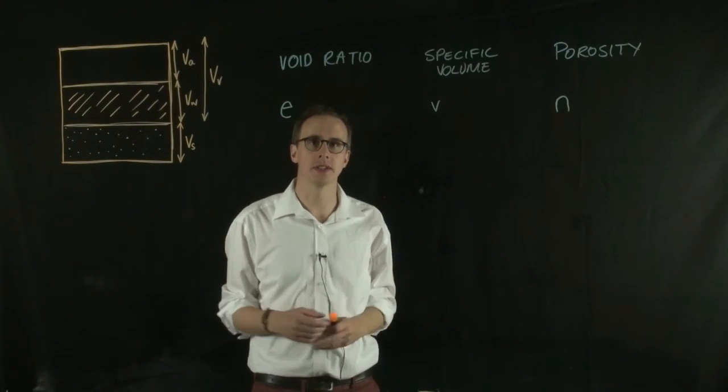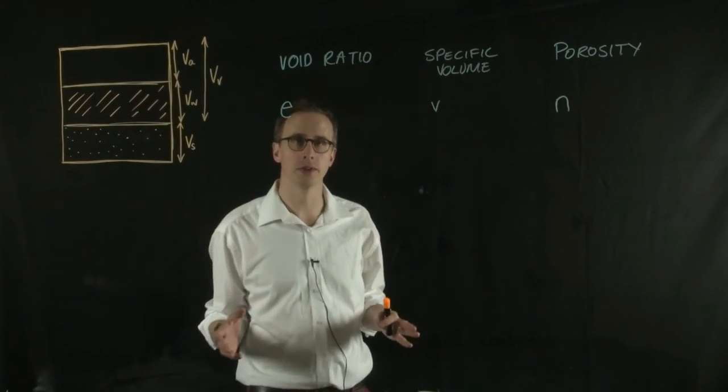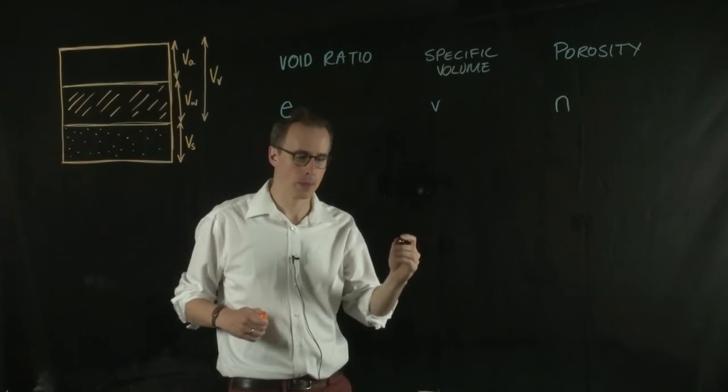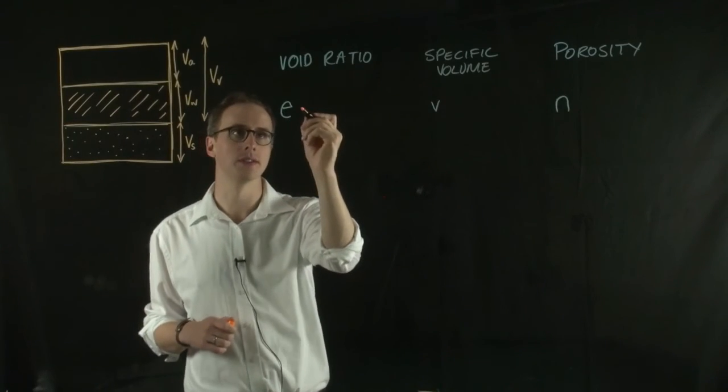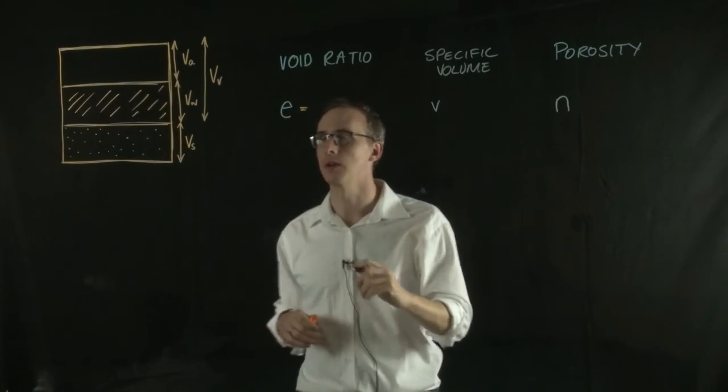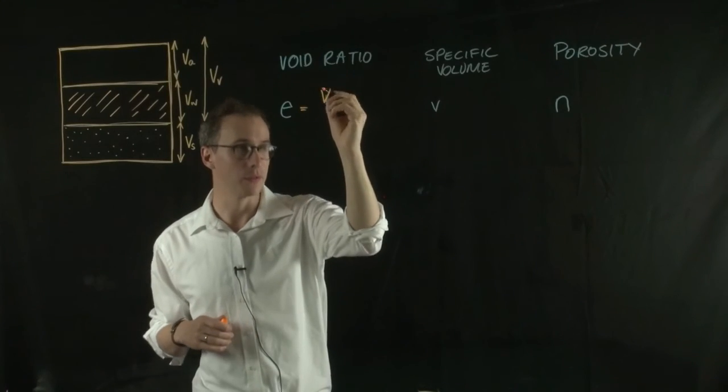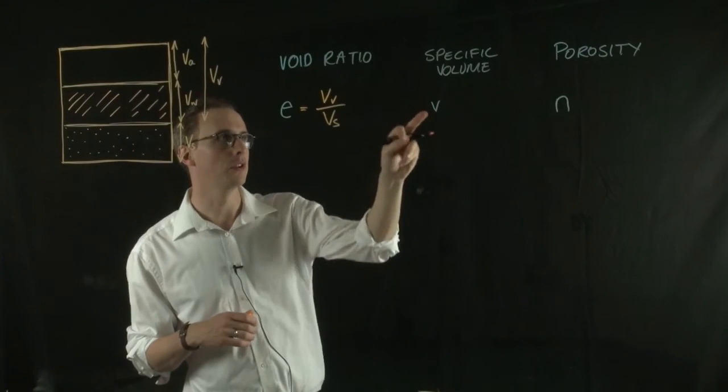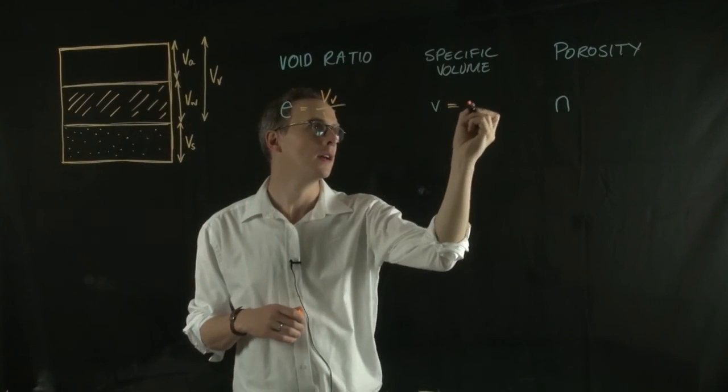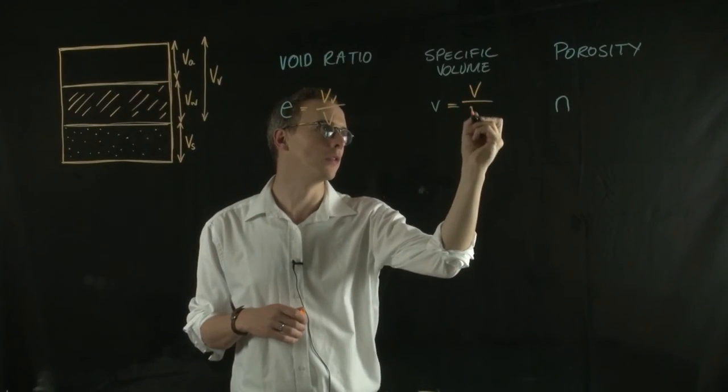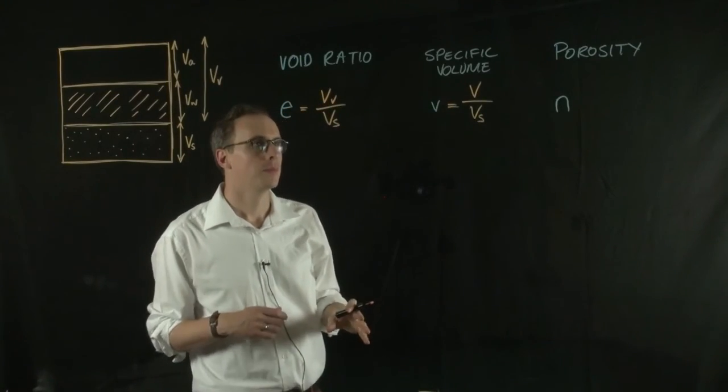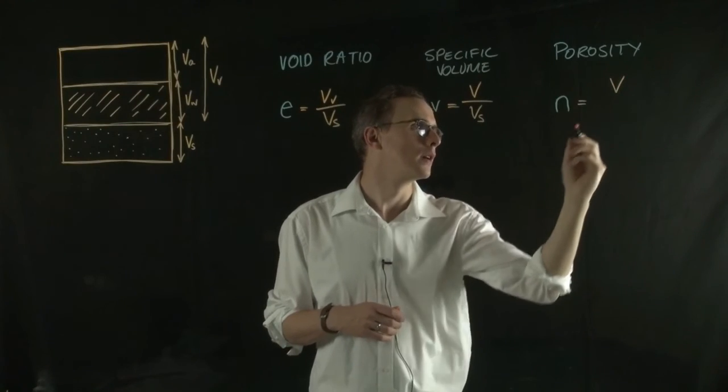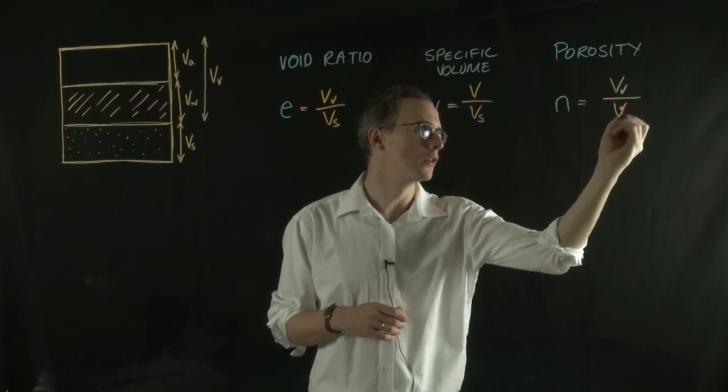These three parameters describe the voids within a soil, and they describe it in slightly different ways. The void ratio, in terms of this three-phase model, is the volume of the voids over the volume of the solids. The specific volume is the total volume over the volume of the solids. And the porosity is the volume of the voids over the total volume.